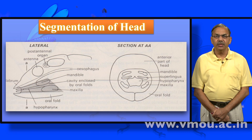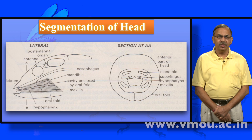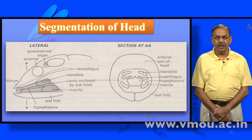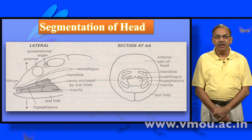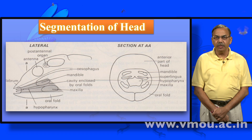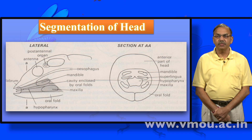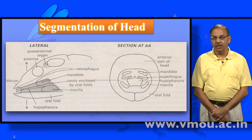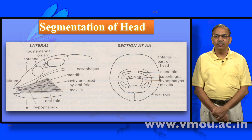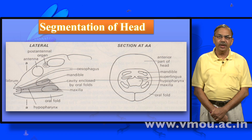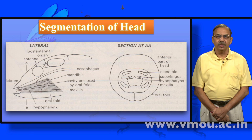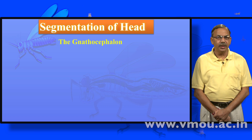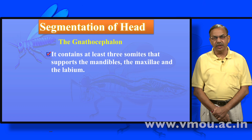This is clear from this figure, which has the labral segment as the upper lip, followed by the lateral lips or the hypopharynx, the mandible cavity, maxillae, oesophagus following behind, and the oral fold or labrum below. The section from AA is distinctly depicting the segmentation of the procephalon and gnathocephalon — showing the mandible, superlinguae, hypopharynx, maxilla and oral fold. This clearly shows what kind of segmentation constitutes the head.